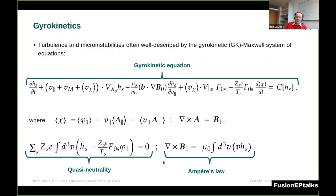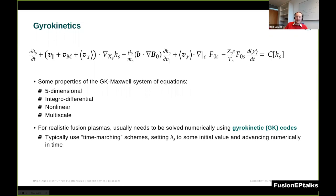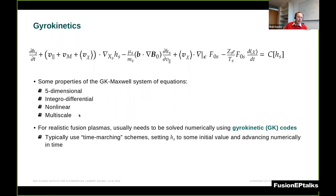The gyrokinetic system is essentially a simplified kinetic model, simplified to make the problem tractable. Nevertheless, it still has a few challenging features: the gyrokinetic system is five-dimensional, it contains integrals as well as derivatives of the distribution function making it integro-differential, it's nonlinear, and it's also multi-scale because it contains kinetics for both ions and electrons which have very different masses. For these reasons, in realistic fusion plasmas one usually needs to solve the gyrokinetic system numerically rather than analytically.